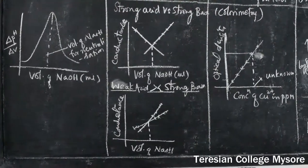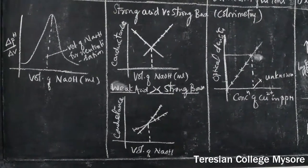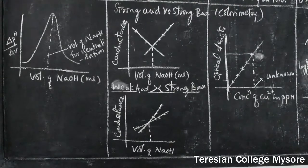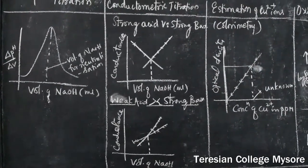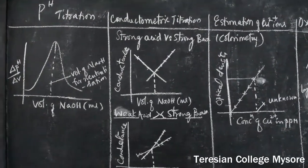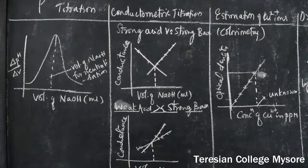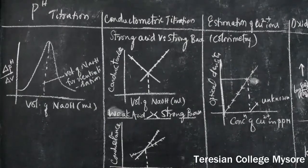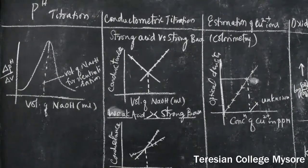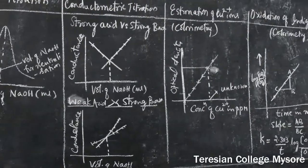Once you get the volume, using the relation V₁N₁ = V₂N₂, you can calculate the normality of the hydrochloric acid or strong acid given. The calculation is done and then posted in the tabular column. The graph should be neat and carries maximum 6 marks. You need to give the scale of the x-axis and y-axis, and write the volume obtained from the graph on the graph sheet itself.